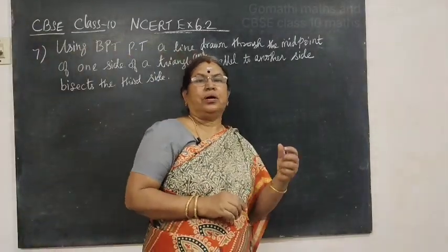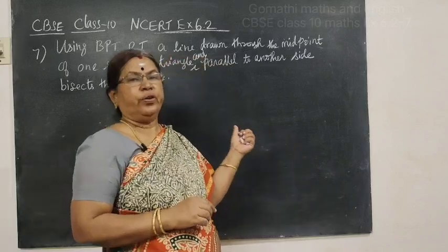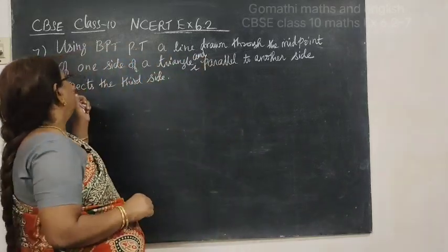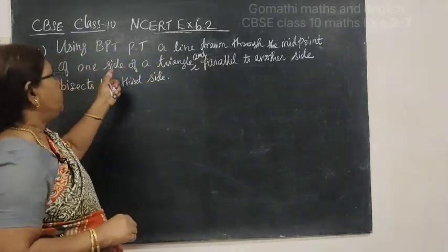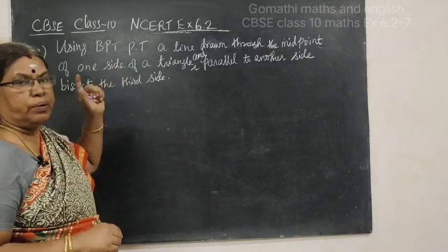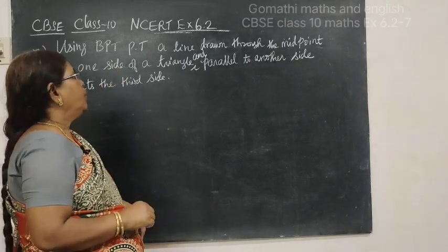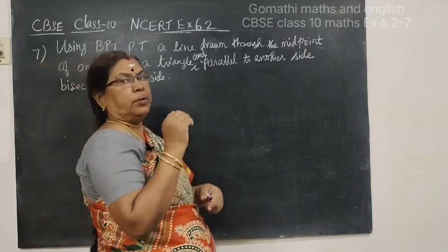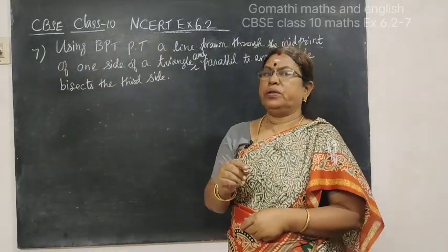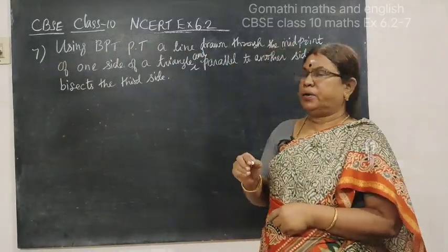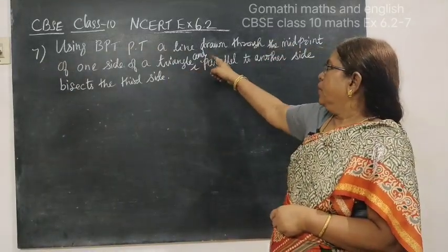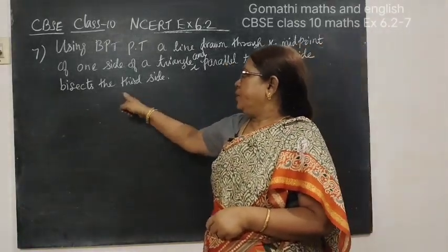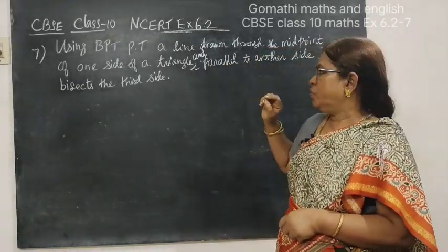Hello viewers. In this video we are seeing NCERT exercise 6.2. Using BPT — the basic proportionality theorem — prove that a line drawn through the midpoint of one side of a triangle and parallel to another side bisects the third side.